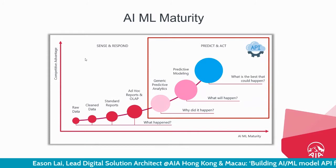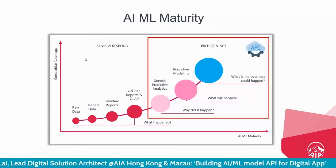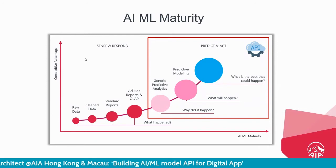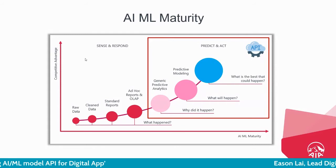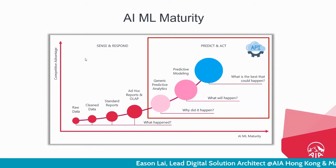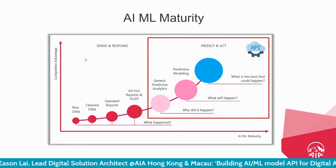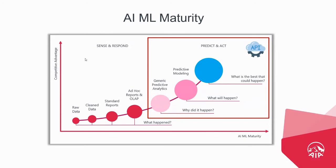We move into some generic predictive analysis — understanding why things are happening — and some predictive modeling to figure out what will happen. In the final maturity stage, we tell the business the best possible outcome. We are no longer using static reports to tell the business what could happen. For things like stock price prediction or revenue forecasting, reports are not enough.